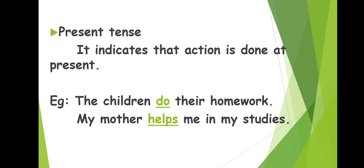Present tense indicates that the action is done at present — the actions which are done right now. Look at the examples. In the first sentence, 'do' is the action word or the verb, and this action word is in present tense, meaning the action is happening right now. In the next sentence, 'My mother helps me in my studies,' 'helps' is the action word and it is in present tense, meaning the action is happening right now.